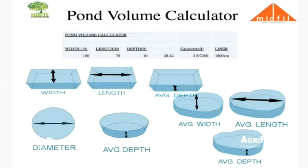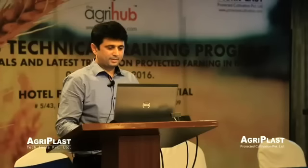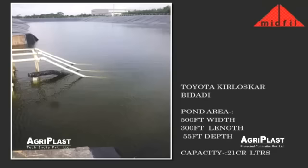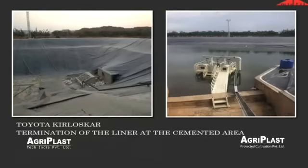For a 32 lakh liter pond, you need dimensions of 150 feet by 75 feet with 10 feet depth, and you actually require a little more to account for buffer and evaporation. The liner required is about 1,800 square meters. Here are a few ponds done by our company — this is the Toyota Kirloskar pond where they are holding about 21 lakh liters.